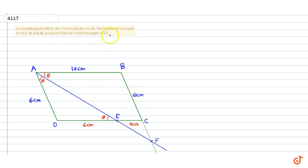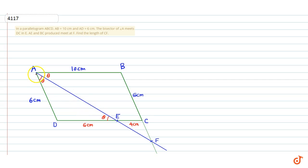Here we have drawn a parallelogram ABCD with parallel sides AB, DC and AD, BC. AE is the bisector of angle A, therefore this angle is equal to theta and this angle is also equal to theta.